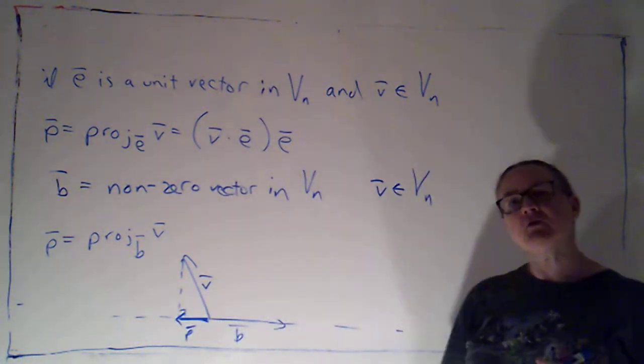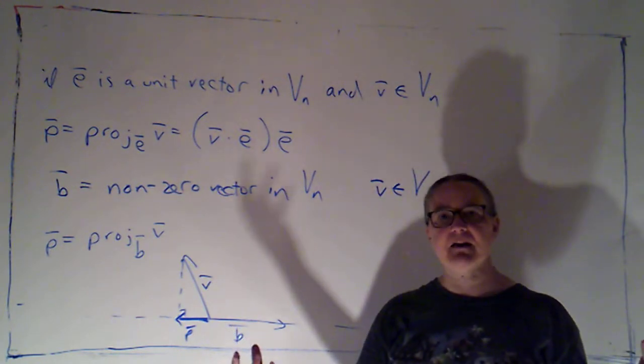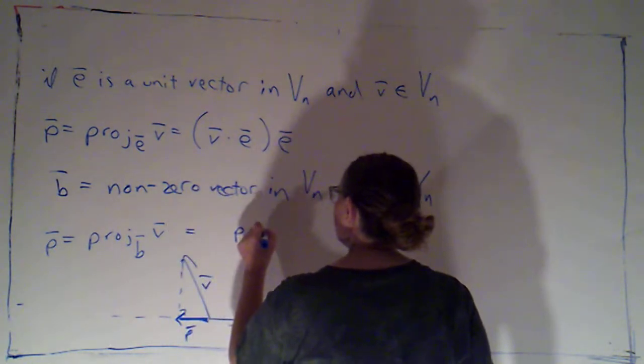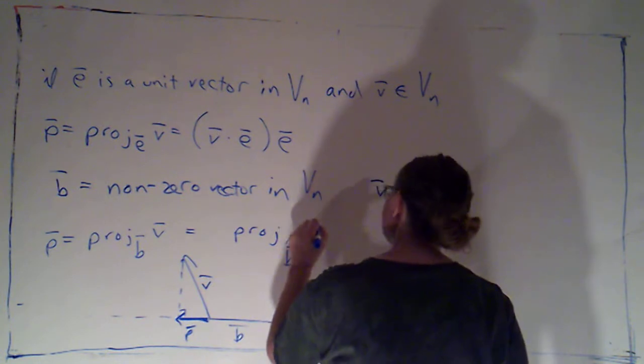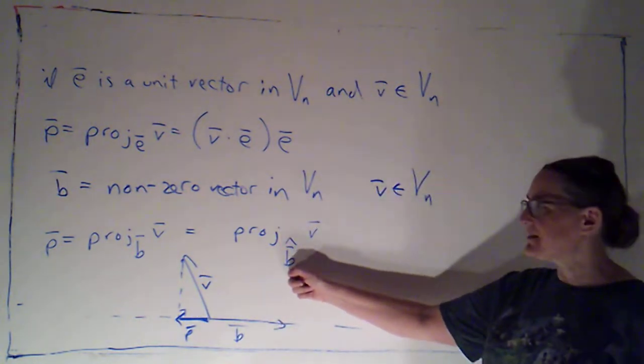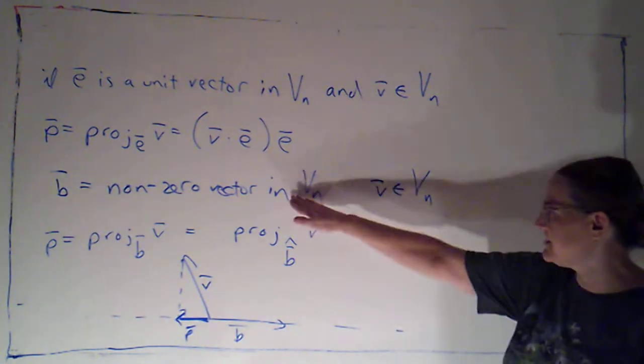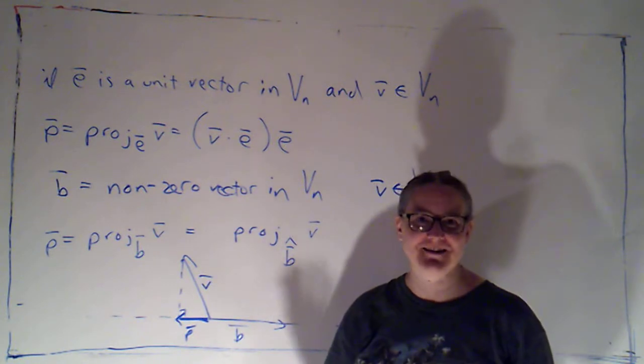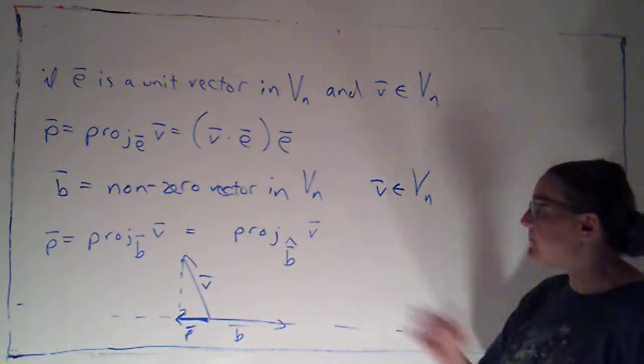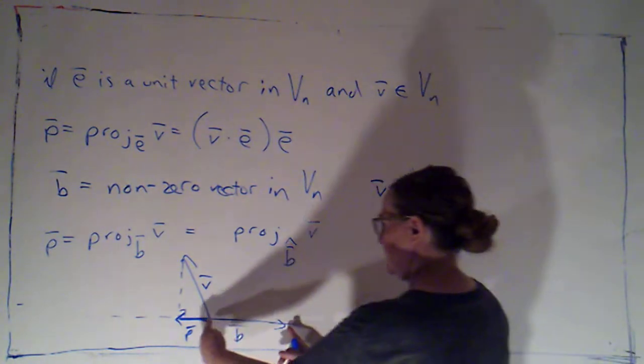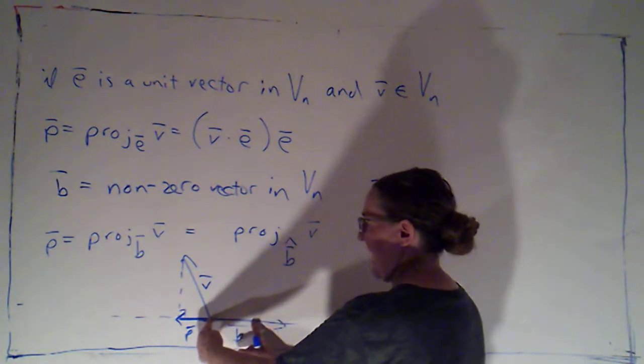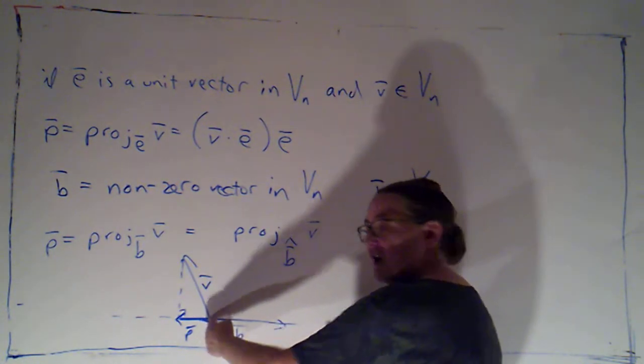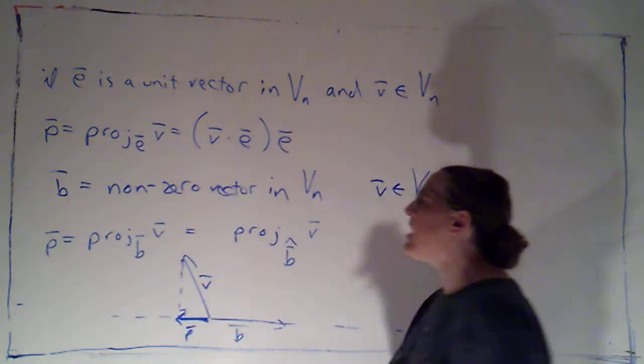But I can find a formula for this if I know that this is valid for any unit vector. Because if I'm projecting onto B, in this case, this is what my projection would look like here. But when I project onto a vector, I'm projecting onto the line determined by that vector. And the line determined by B is exactly the same as the line determined by B hat, which would be B normalized. As long as B isn't the zero vector, I can stretch or shrink it to create a unit vector that points in the same direction.